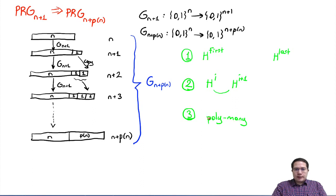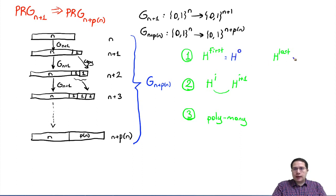Rule three says there must be polynomially many hybrids. We will call our H_first as H_0 and our H_last as H_{p(n)}, for some polynomial p.